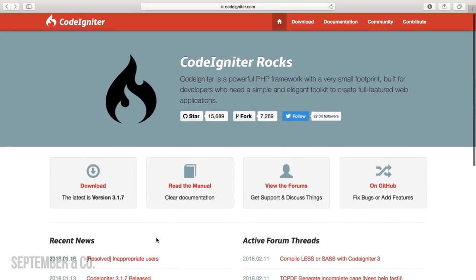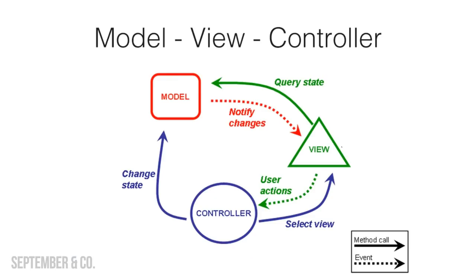Now before we dive in, let's talk about Model View Controller architecture, because CodeIgniter follows the MVC architecture. I don't want to overwhelm you with information, so let's keep it simple. This MVC architecture helps us to divide our code into certain parts instead of writing everything together, and this makes our development easier and faster. We will learn everything as we progress, so don't worry about that right now — we are going to clear all the doubts and confusions as we progress.